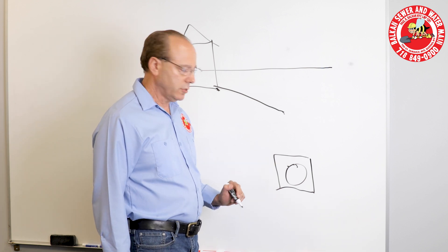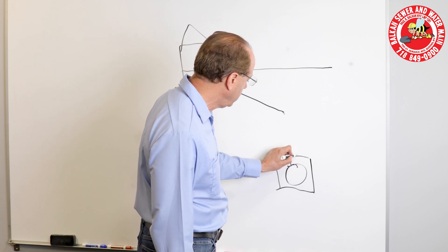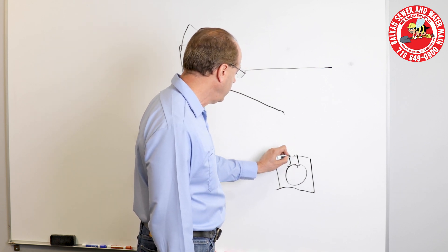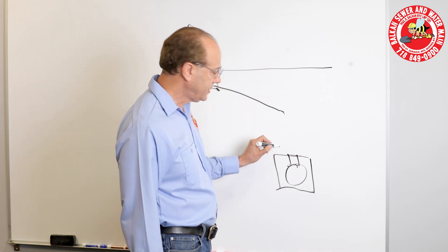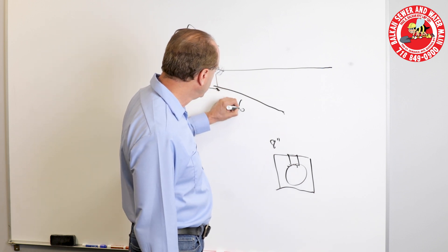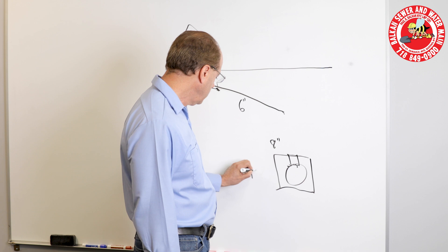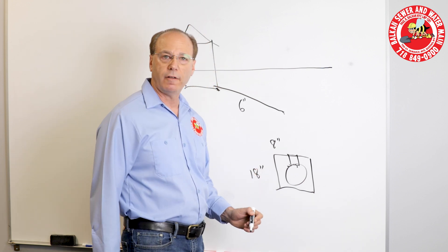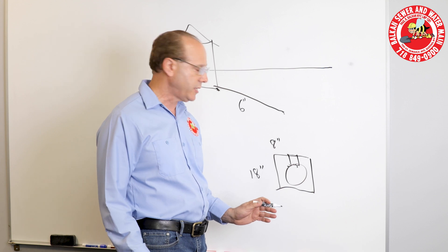After the concrete cures, a core drill penetration has to be made through the concrete and through the city sewer. Typically a riser connection itself is eight inch pipe. The house sewer would be six inch pipe. The city sewer could be 18 inch, could be 12 inch, could be larger than that, but the process would essentially remain the same.